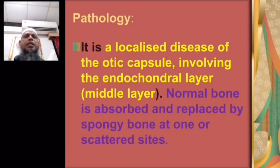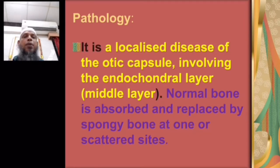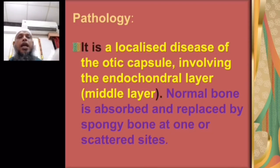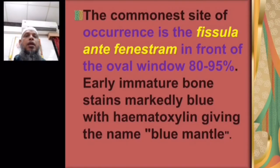Pathology: it is a localized disease of the otic capsule involving the endochondral layer, the middle layer. The otic capsule has three layers: the endosteal inner layer, the middle endochondral layer, and the outer periosteal layer. The disease occurs in the endochondral layer — normal bone is absorbed and replaced by spongy bone. The commonest site is the fistula ante fenestram, in front of the oval window, in 80–90% of cases. Early immature bone stains markedly blue with haematoxylin, giving the name 'blue mantle.'